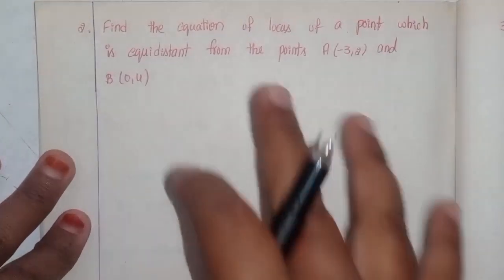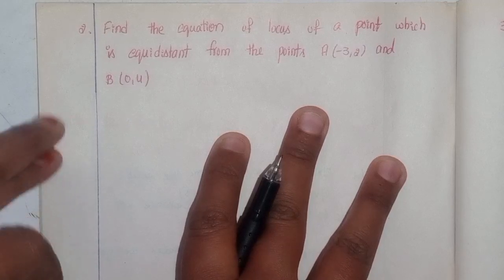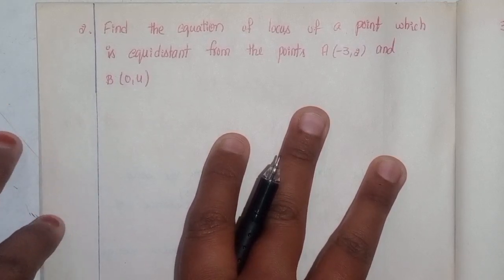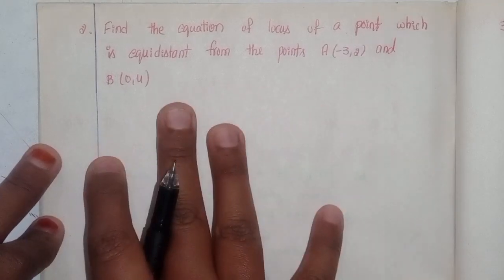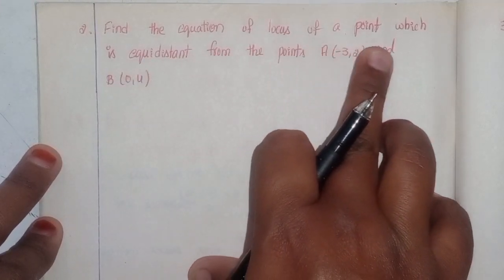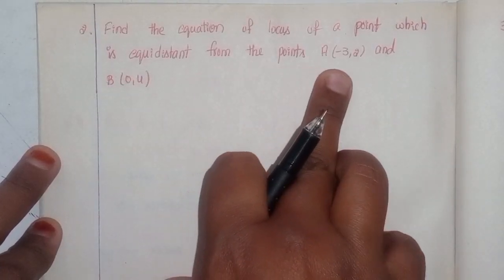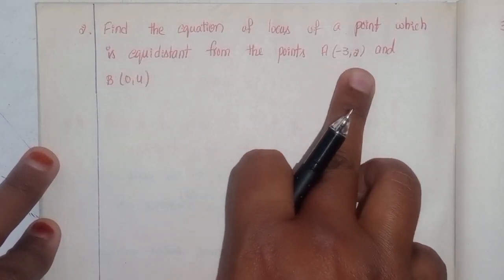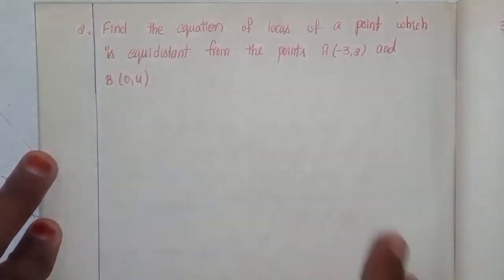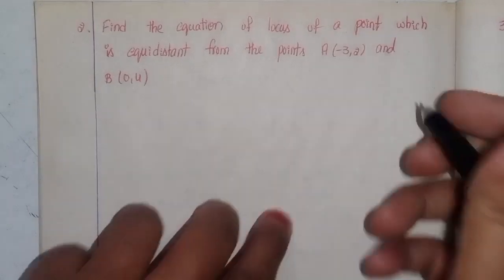This is Shahin, welcome back to our channel. Today we will discuss Intermediate First Year 1B, Chapter 1, Locus — Exercise 1A, first Roman, second problem. We need to find the equation of the locus of a point which is equidistant from two given points.